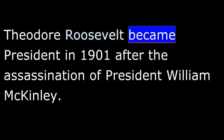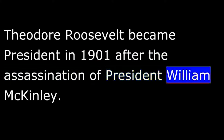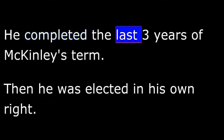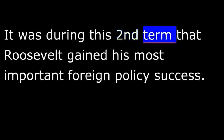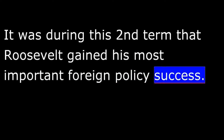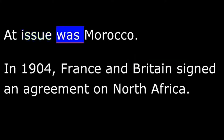Theodore Roosevelt became president in 1901 after the assassination of President William McKinley. He completed the last three years of McKinley's term, then was elected in his own right. It was during this second term that Roosevelt gained his most important foreign policy success — he negotiated an end to a war between Russia and Japan. Later, he was asked to settle another international dispute.